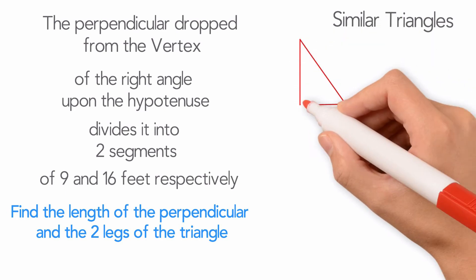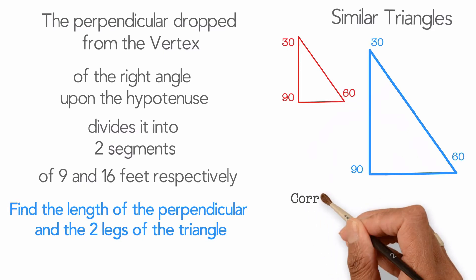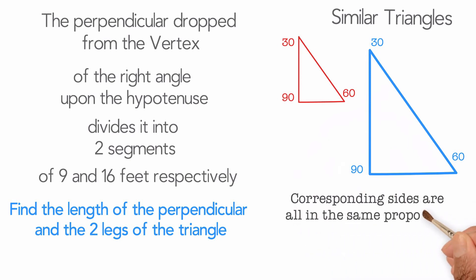Assume we have two right angle triangles out here. As you can see, they have different lengths, but their angles are equal. So these triangles would be similar. And we can say that since they are similar, their corresponding sides are all in the same proportion. So what does this mean?